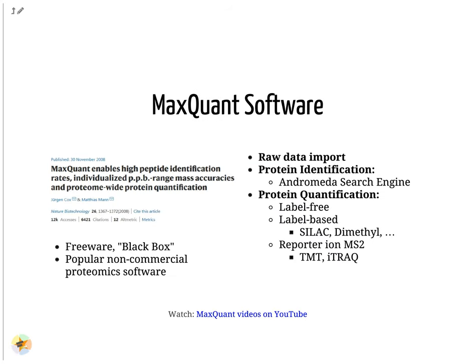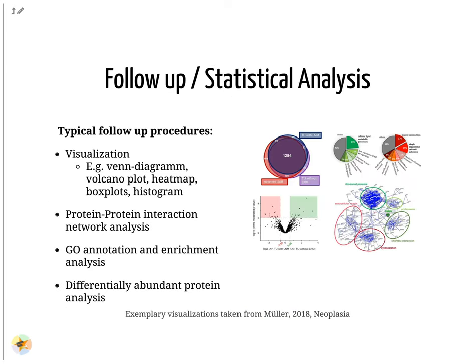MaxQuant is the most popular non-commercial software for quantitative proteomics experiments. It performs protein identification via its Andromeda search engine. Protein quantification of label-free and many label-based methods is supported as well. MaxQuant accepts raw data in vendor-specific formats. Typical follow-up analyses include visualization, network and GO-enrichment analysis.